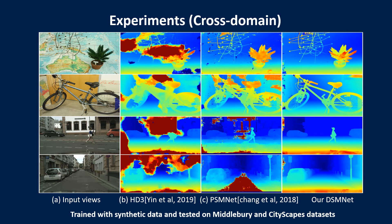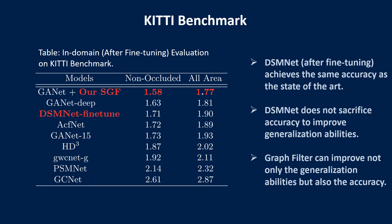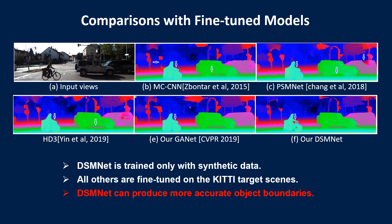We compare our model with state-of-the-art zero-shot stereo matching networks. Models are trained only with synthetic data and tested on the real Middlebury and Cityscapes datasets. Our DSMNet achieves far better depth results than state-of-the-art models. We also evaluate on the KITTI benchmark, where DSMNet is far better than existing self-supervised models and even outperforms some fine-tuned models like DisparityNet and MC-CNN. The fine-tuned DSMNet achieves similar accuracy to state-of-the-art models without sacrificing accuracy for generalization. Compared with models trained on real data, our DSMNet trained with synthetic data produces more accurate object boundaries due to the more accurate depth labels in synthetic data.